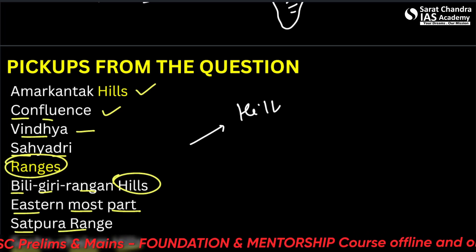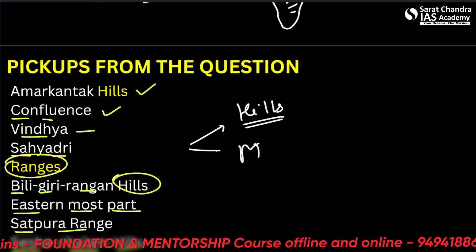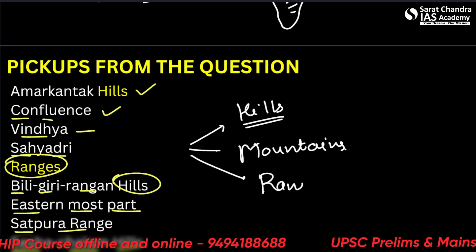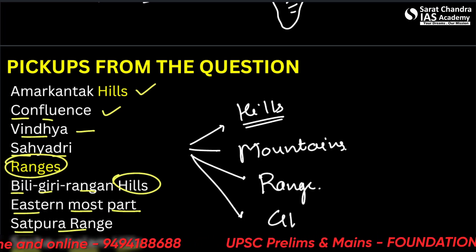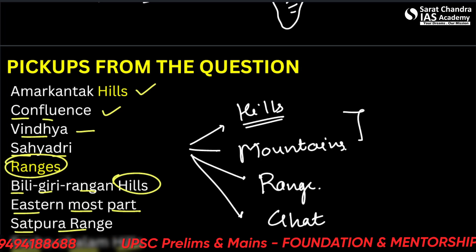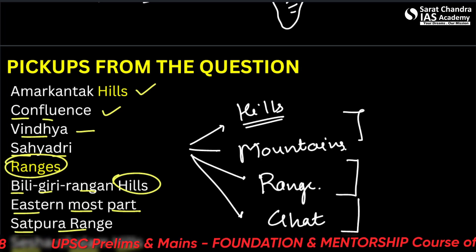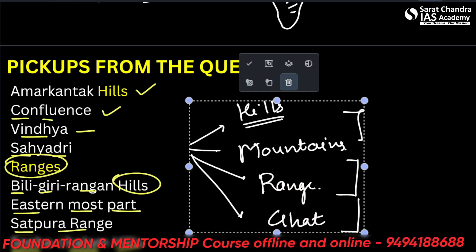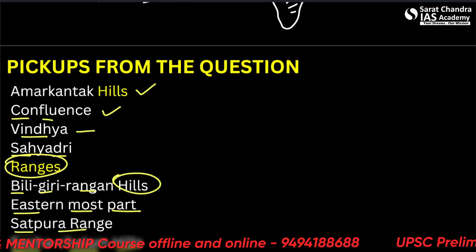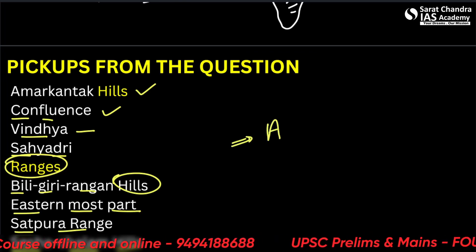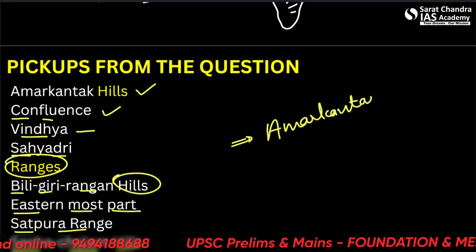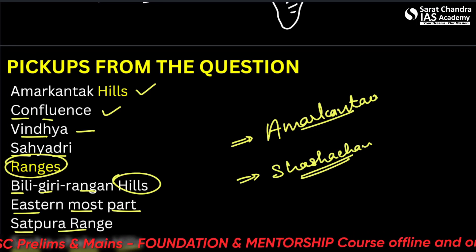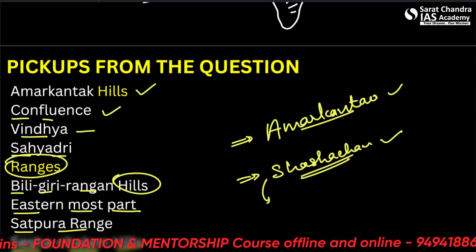Let's understand four key terms: hills, mountains, range, and ghats. Understanding the etymology of names also helps — Amarkantak means the immortal essence or eternal light. Vindhya Achal: Achal means immovable, Vindhya means bow-like. Sahadri means the benevolent mountains. Biligiri Rangan means the white hill of Lord Ranganatha.